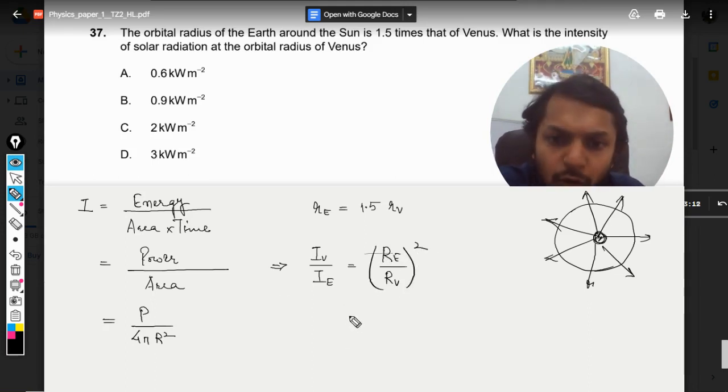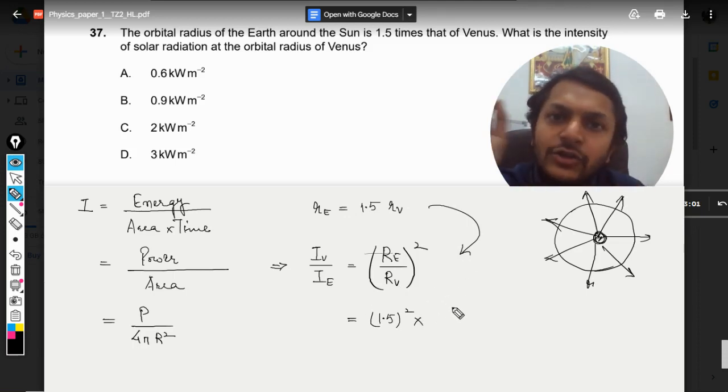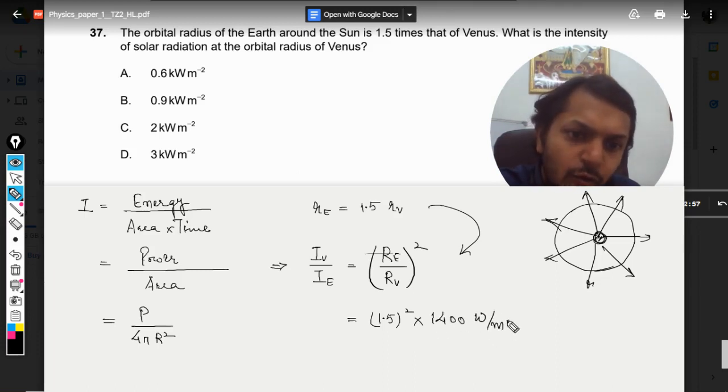Now what is r_e by r_v? From here I can say it will be 1.5, so it is (1.5)² multiplied by I_e. The intensity on the surface of the Earth is taken as 1400 watt per meter squared.